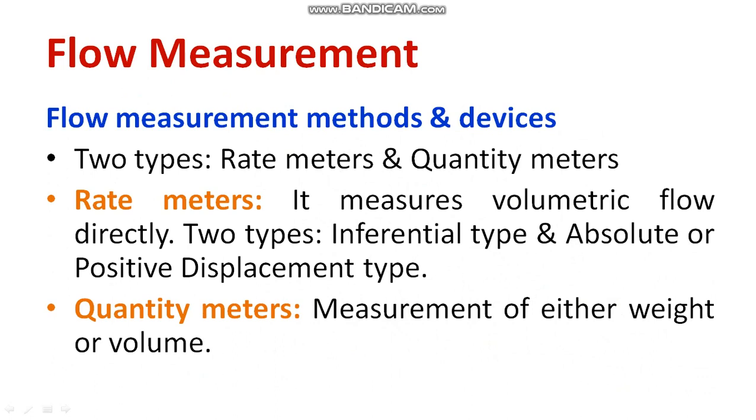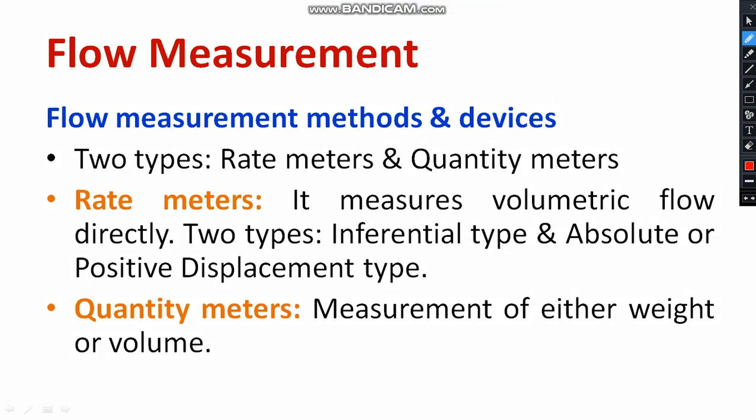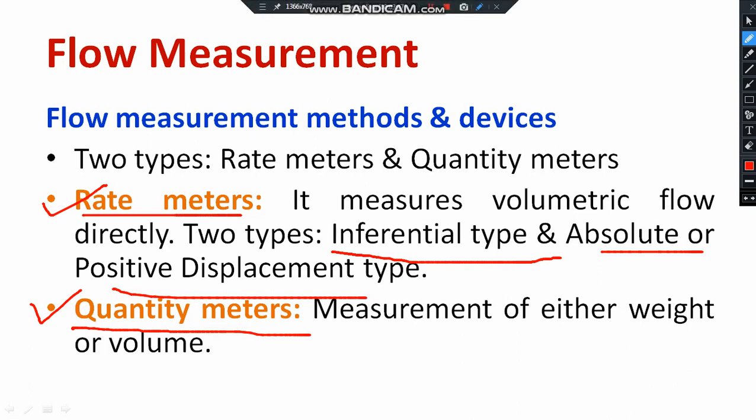There are two types of meters available for the measurement of fluids in general classification. One is rate meters, another one is quantity meters. The rate meter is the direct measurement, where quantity meters go for indirect measurement. The rate meters are classified as inferential type and positive displacement type. These are the two general classifications of fluid measurement methods.